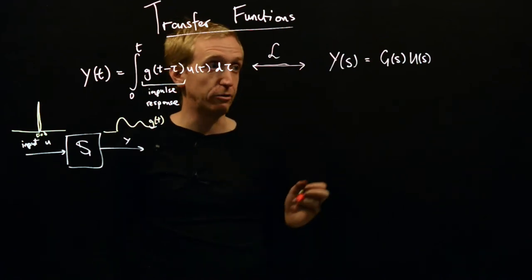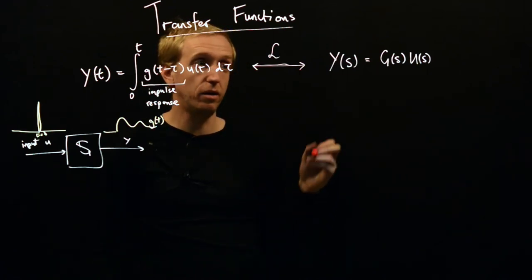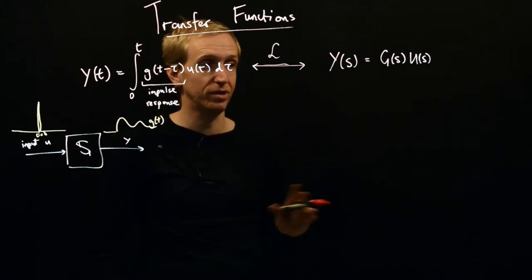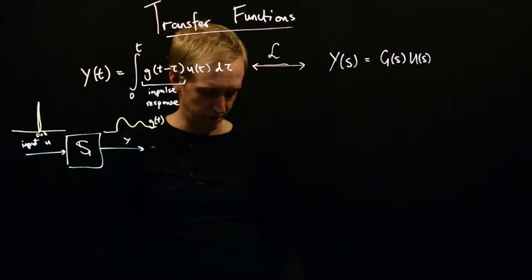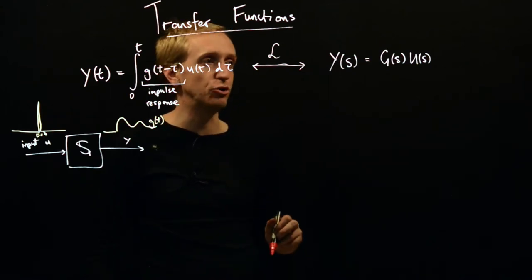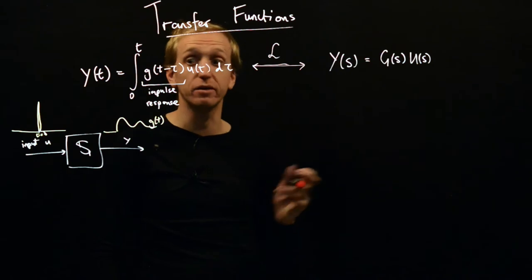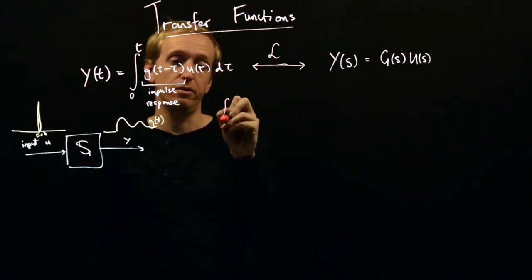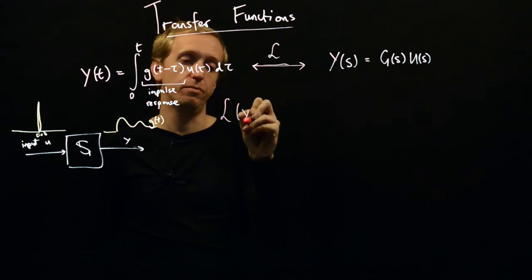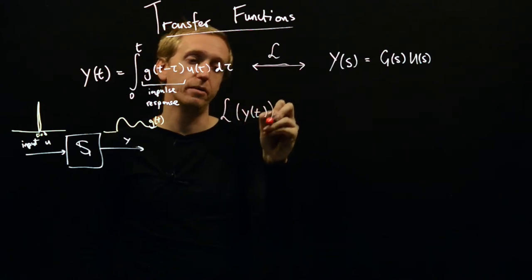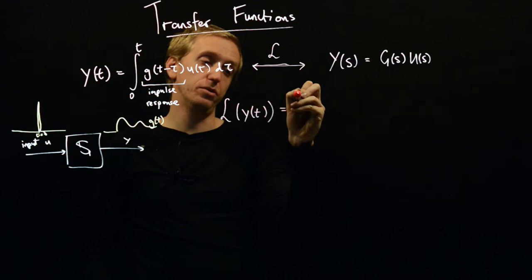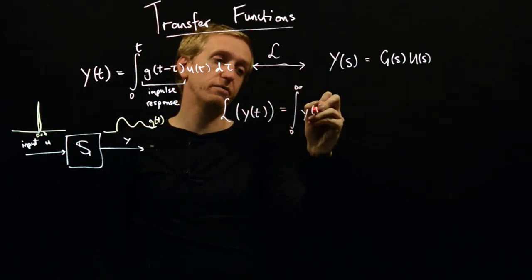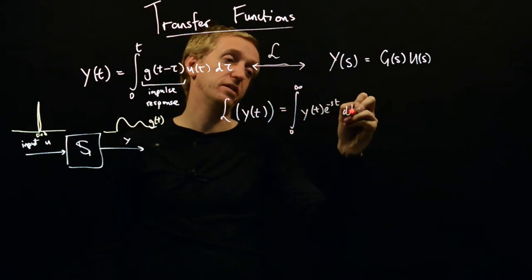The derivation is not particularly hard. We just more or less have to apply the definition of the Laplace transform and do a little bit of rearranging and massaging of integrals. So, the first thing, let's just take the one-sided Laplace transform of y. And this is equal to the integral from zero to infinity of y of t e to the minus st dt.